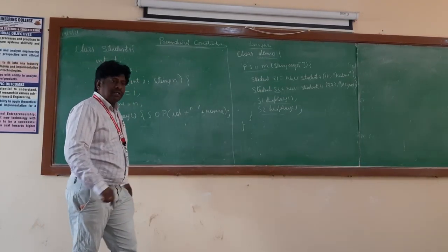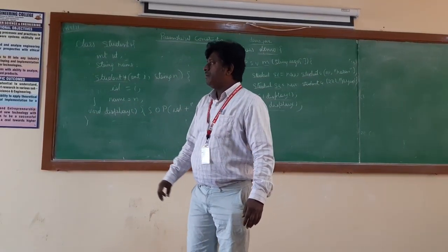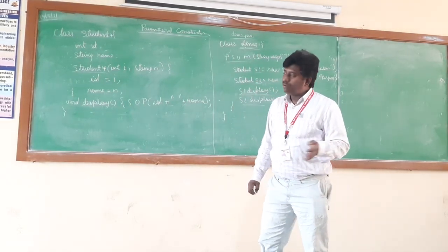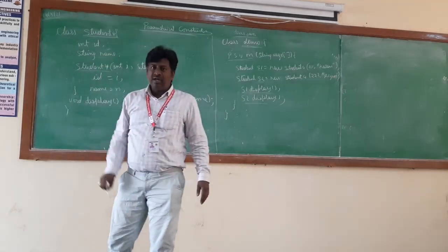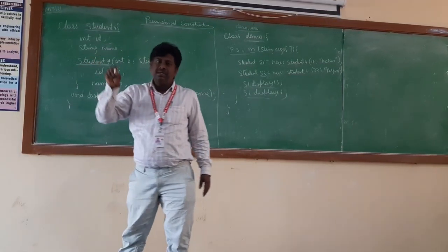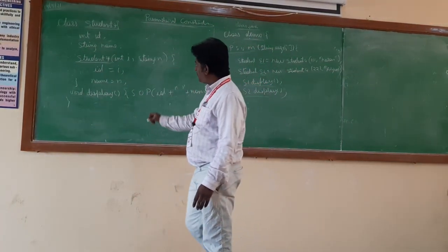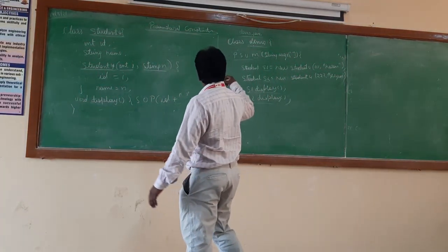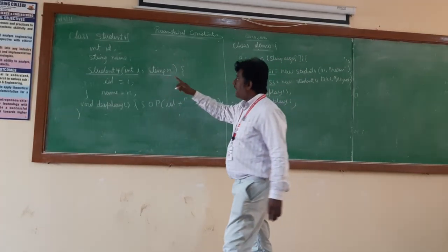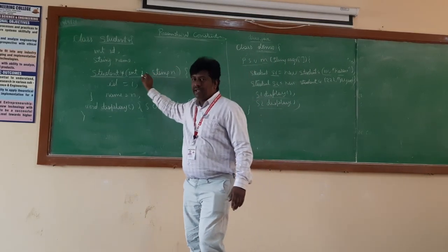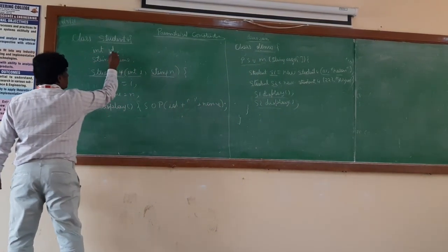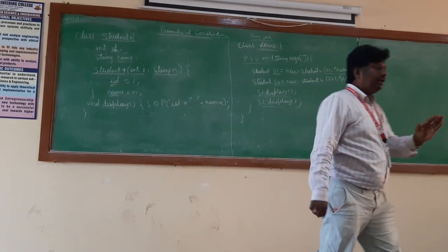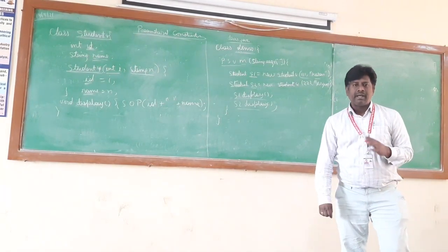In order to demonstrate the parameterized constructor, we need to write a constructor. Remember that a constructor is a special member function — it will have the same name as the class. Here the class name is Student4, so the constructor name is also Student4. The parameterized constructor has two parameters inside: the first parameter is an integer 'i', and the second parameter is a string 'n'. These are the two parameters.